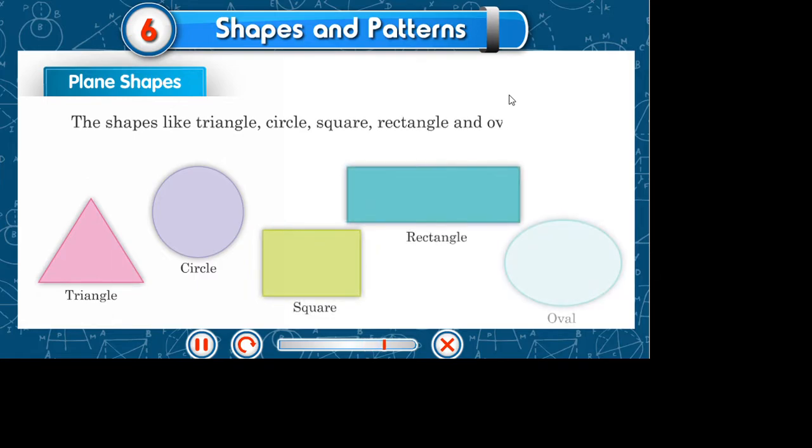Chapter 6: Shapes and Patterns. Plane Shapes. The shapes like triangle, circle, square, rectangle, and oval are called plane shapes.